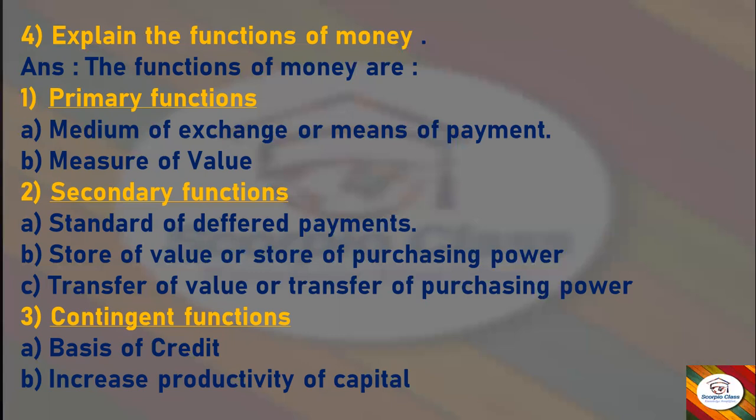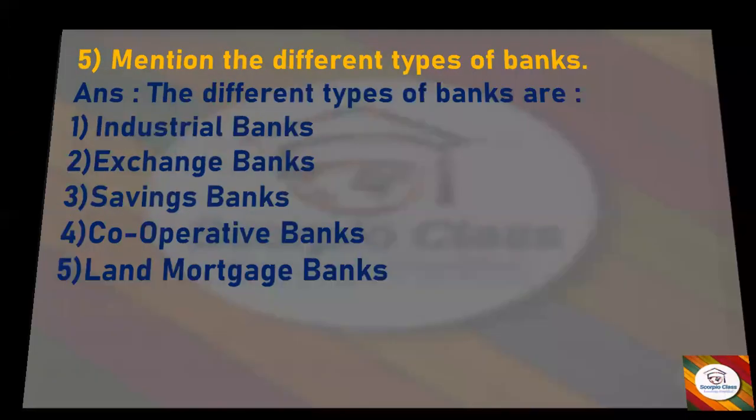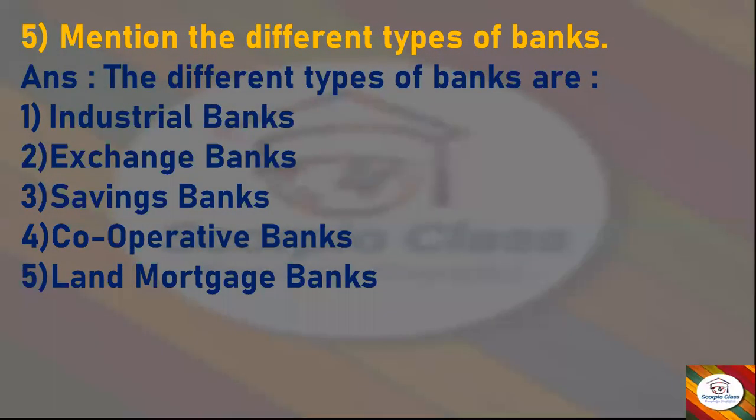Now let's move to the next question: Mention the different types of banks. Answer: The different types of banks are industrial banks, exchange banks, savings banks, cooperative banks, and land mortgage banks. These are the different types of banks.